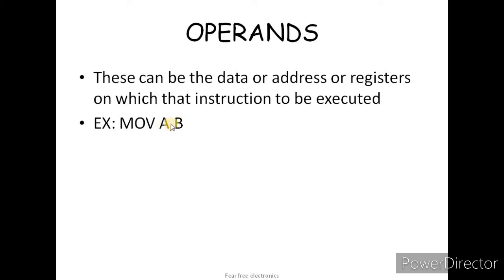For example, register A has some data and register B has some data. We want to transfer data from the right side to the left side — from B register to A register. So we use MOV A, B. The B register data moves to the A register. This is about operands.